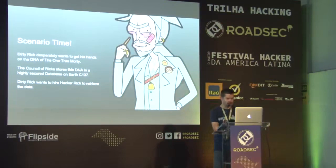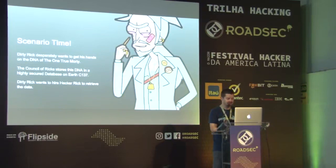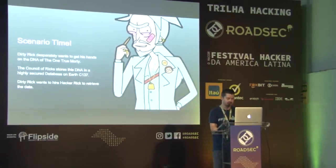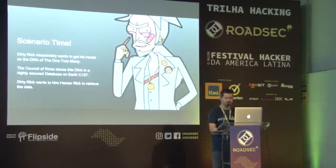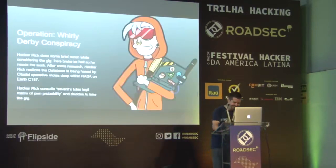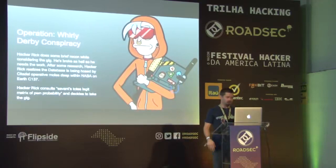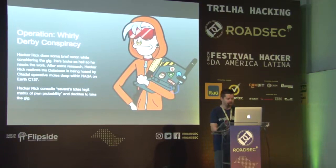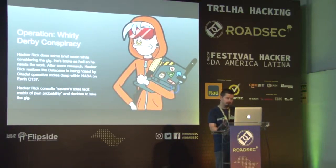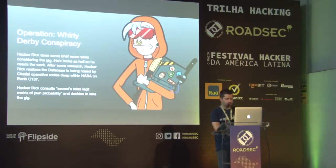So this is a hypothetical red team operation we're going to run. Dirty Rick desperately wants to get his hands on the DNA of the one true Morty. The Council of Ricks stores this DNA in a highly secured database on Earth C-137. Dirty Rick wants to hire Hacker Rick to retrieve the data. We're going to call the operation the Whirly Derby Conspiracy. Hacker Rick does some brief recon and realizes the database is being hosted by Citadel operatives deep within NASA on Earth C-137. Hacker Rick consults Savant's totes legit matrix of prone probability and decides to take the gig.